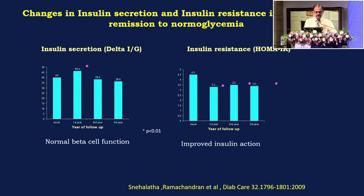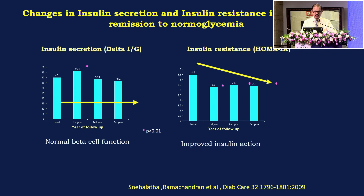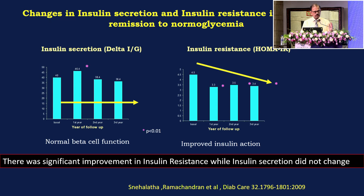In a paper we published in 2009 in Diabetes Care, we looked at changes in insulin secretion and insulin resistance in those who remitted to normal glycemia. On the left, insulin secretion measured by delta IG did not change at all. On the other hand, insulin resistance measured by HOMA-IR showed a significant decrease. This means the mechanism of remission was improvement in insulin resistance, while insulin secretion did not change.